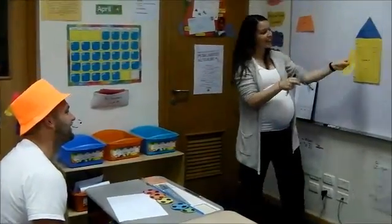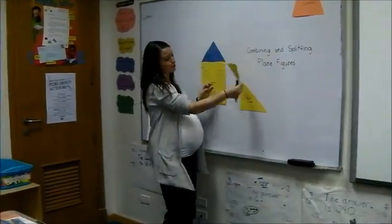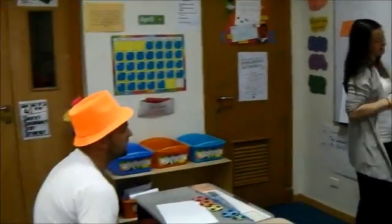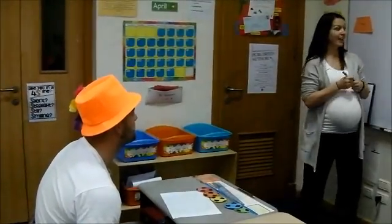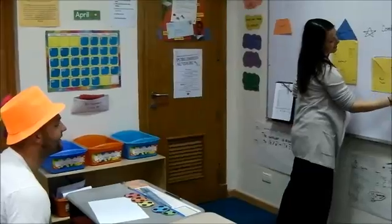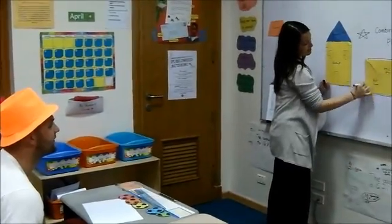Alright, now if we take two right triangles and watch this, and we put them together, what shape does that make? That makes a star. Not quite, a star is like this, right? Oh yeah. That makes a square. Square, very good.